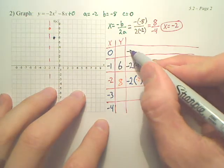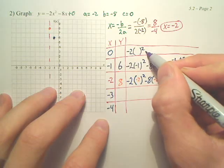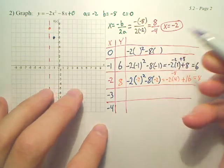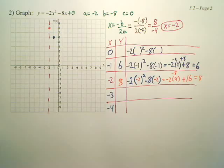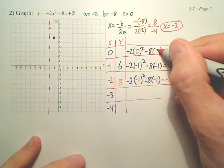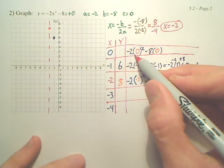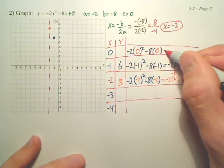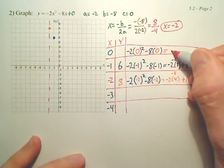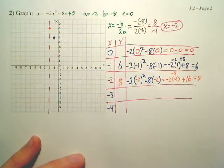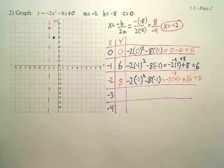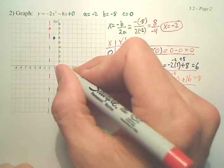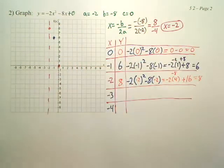Negative 2 times x squared minus 8 times x. I always love plugging in 0. 0 is the easiest number to plug in. That's 0 equals 0 minus 0. I always love 0, it's just so easy to plug in. So 0, 0, right there. Over 0, up 0.